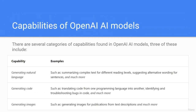What are the capabilities of OpenAI models? There are several categories of capabilities found in OpenAI models. Three of these include generating natural language — such as summarizing complex texts for different reading levels or suggesting alternative wording for sentences; generating code — such as translating code from one programming language into another, or identifying and troubleshooting bugs; and generating images — such as generating images for publications from text descriptions.